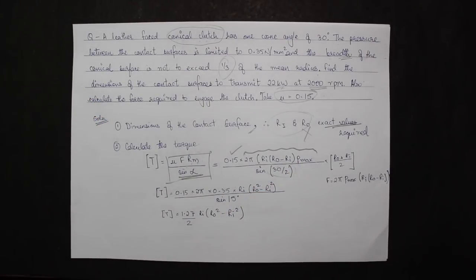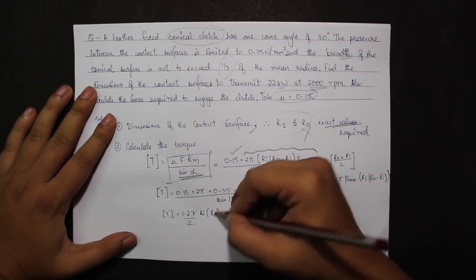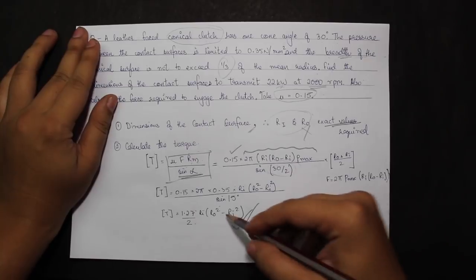Alpha is to be divided by 2 and put, because this complete cone angle is given as 30. So the half of angle of 30 would be 30 by 2. So my design torque comes out to be 1.27 divided by 2 ri r0 square minus ri square, combining both the r0 and ri.